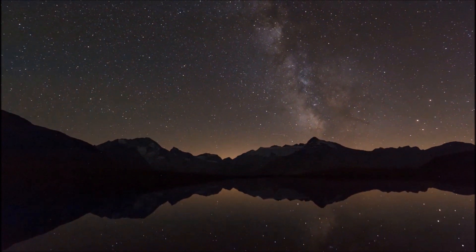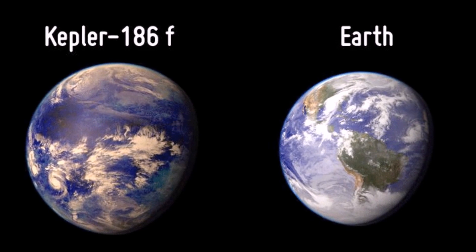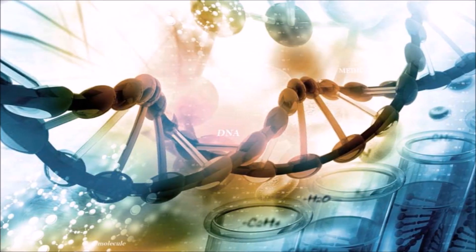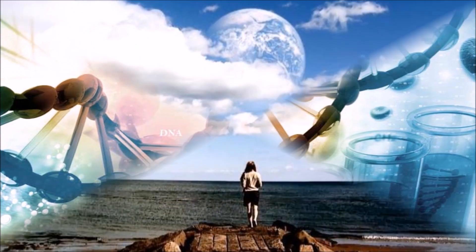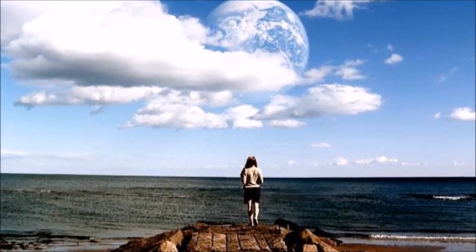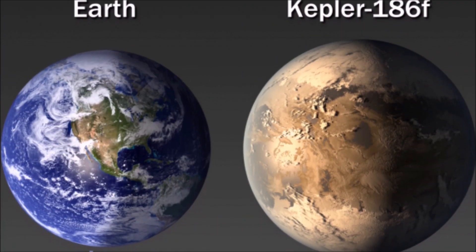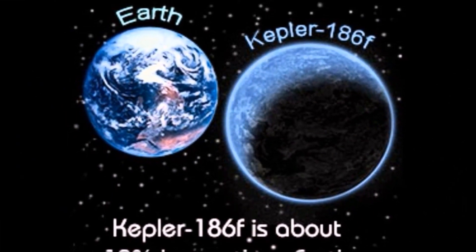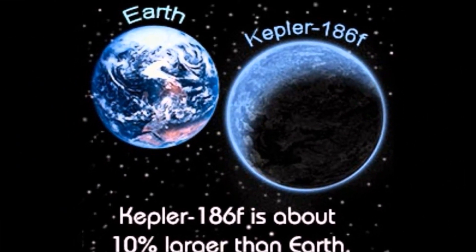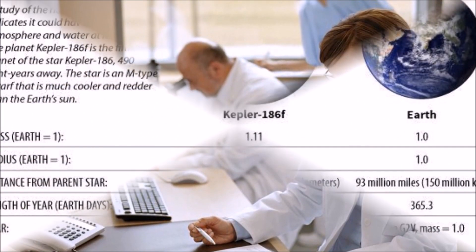Kepler-186f is really cool because it started things off when it came to searching for Earth-like planets. It was humans' first confirmation that other planets like the Earth might actually exist. These planets are also our best chances of species' survival in the event of a worldwide catastrophe. Kepler is very close-sized to Earth, with Kepler-186f being even less than 10% larger.